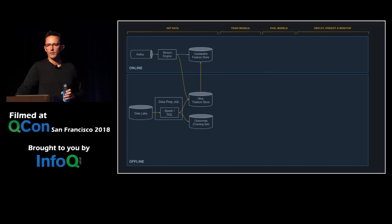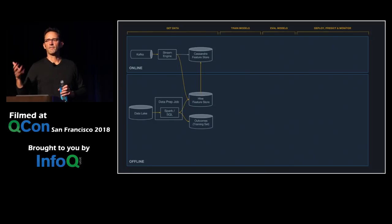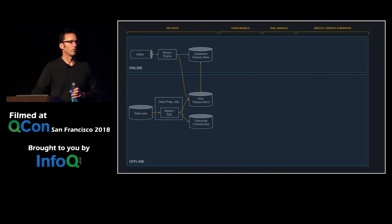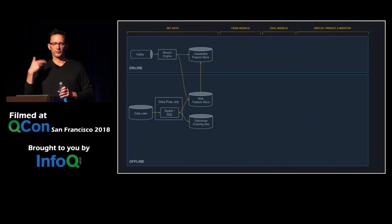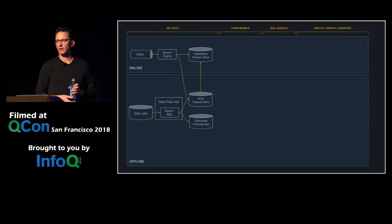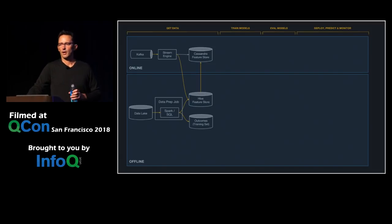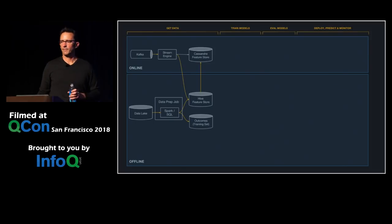However, there are cases where you want features to be a lot fresher. In addition to the two-week meal prep time, you may also want to know how busy the restaurant is right now — the meal prep time over the last hour or five minutes. For that freshness, you can't afford offline jobs. So we have a streaming path where metrics come out of Kafka, we run a Flink job to aggregate across the stream, write those numbers into Cassandra, and double-write them back to Hive so you have the exact same numbers available later for training. Parity between online and offline is super important, and the way we solve it is by computing the feature once and double-writing it to both stores.